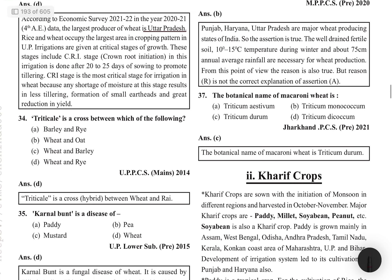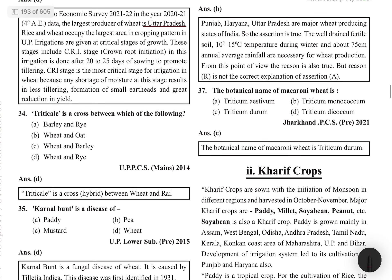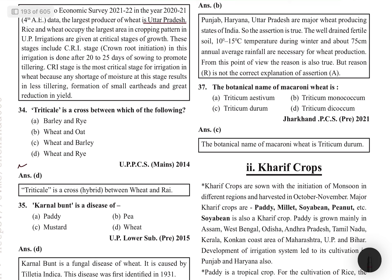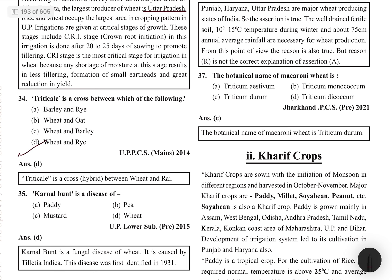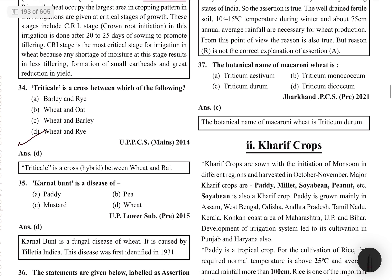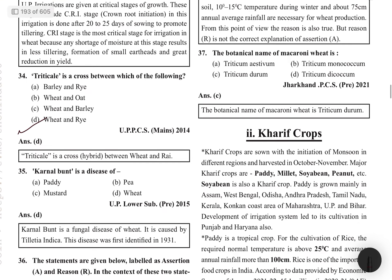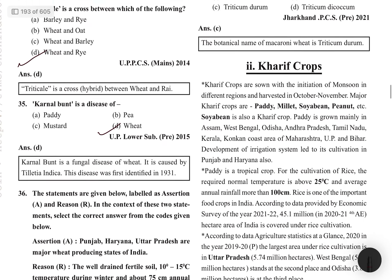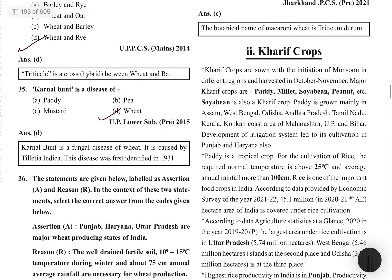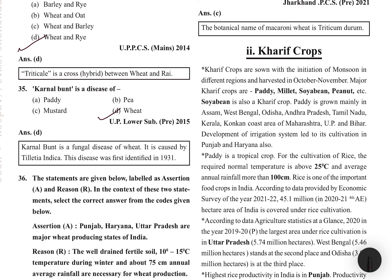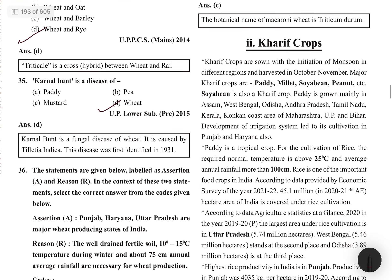Triticale is a cross between wheat and rye. Karnal bunt is a wheat disease — it is a fungal disease caused by Tilletia indica, first identified in 1931.